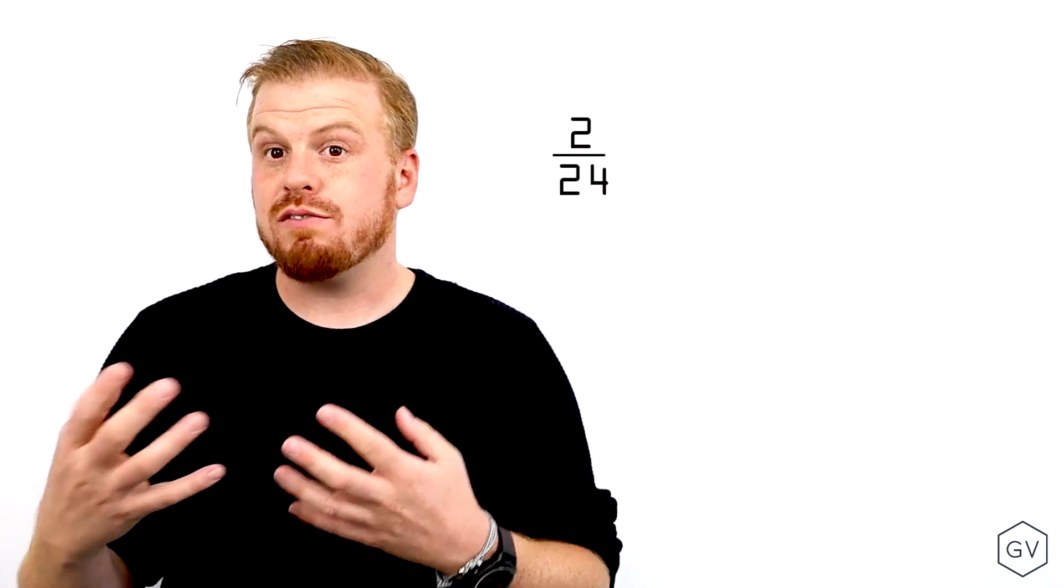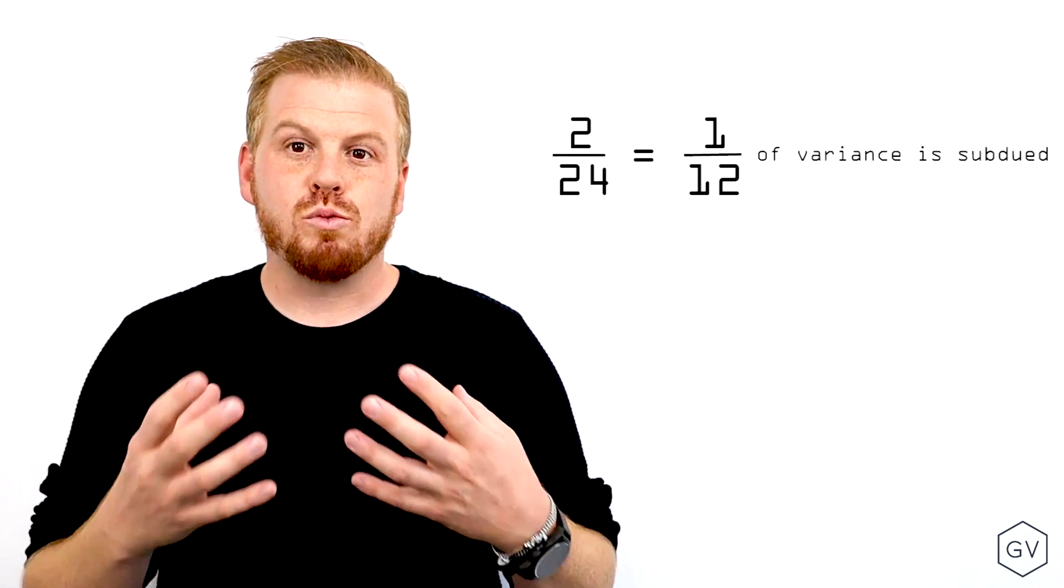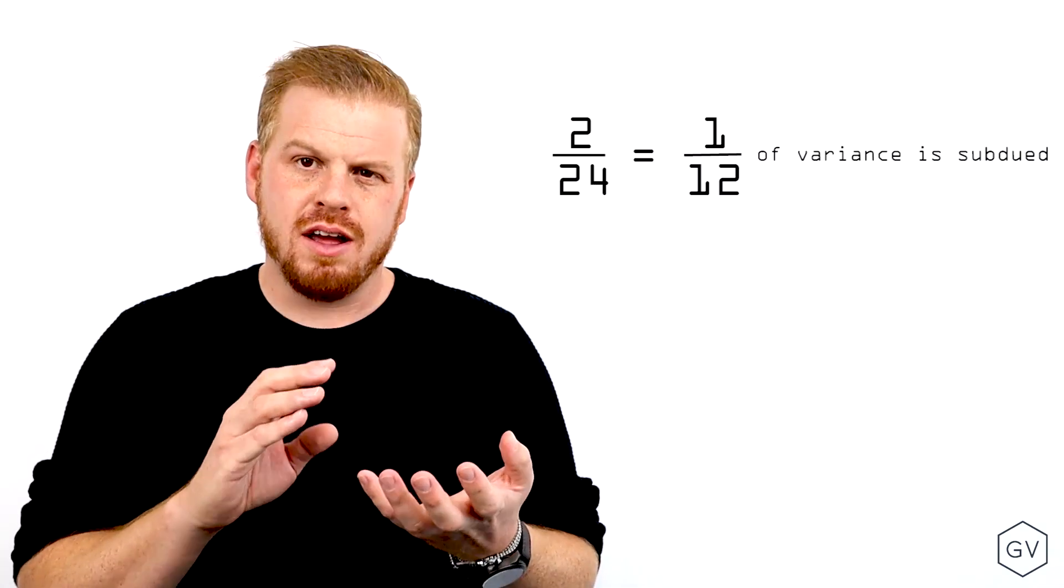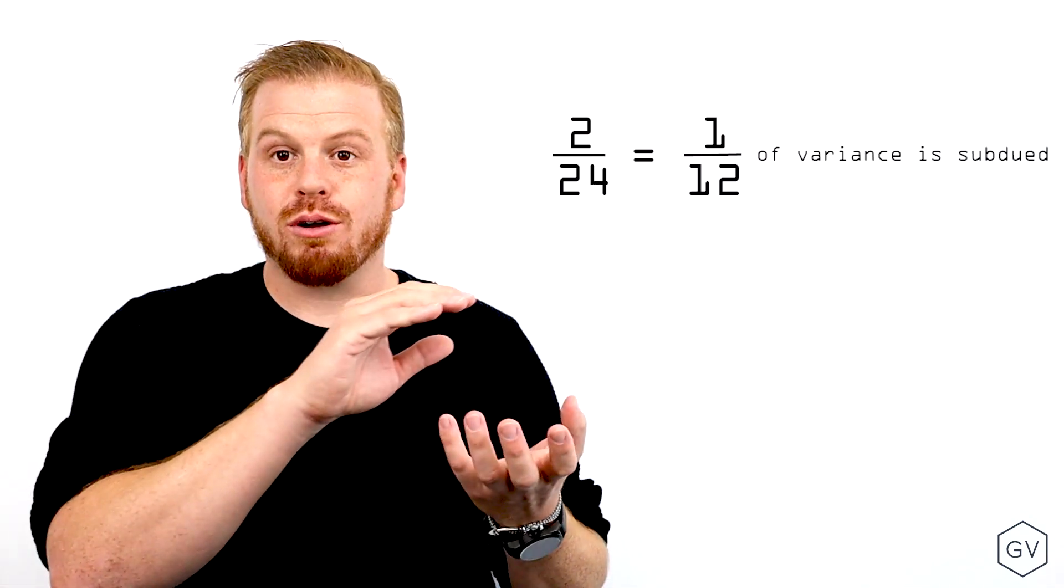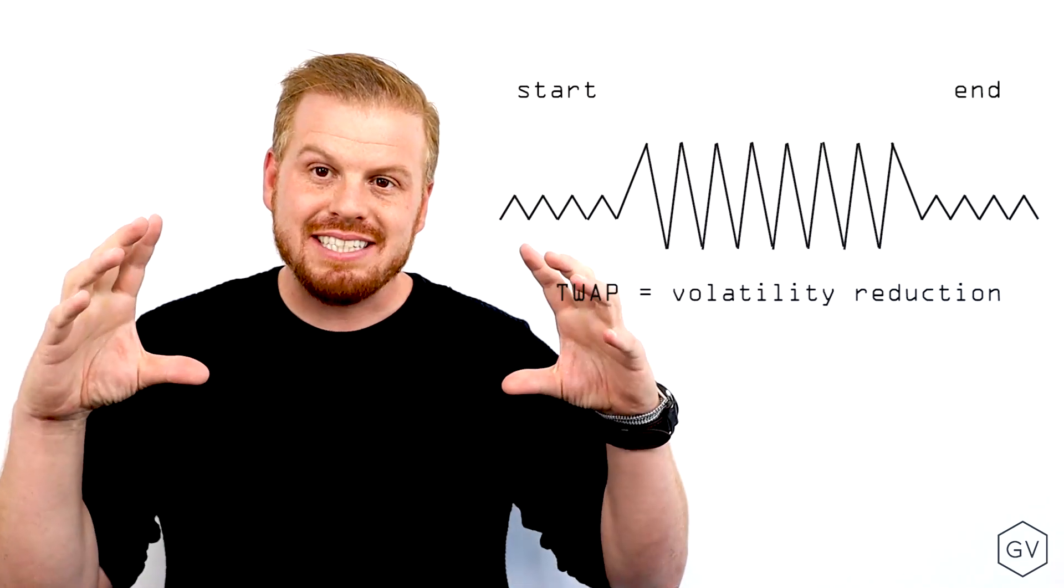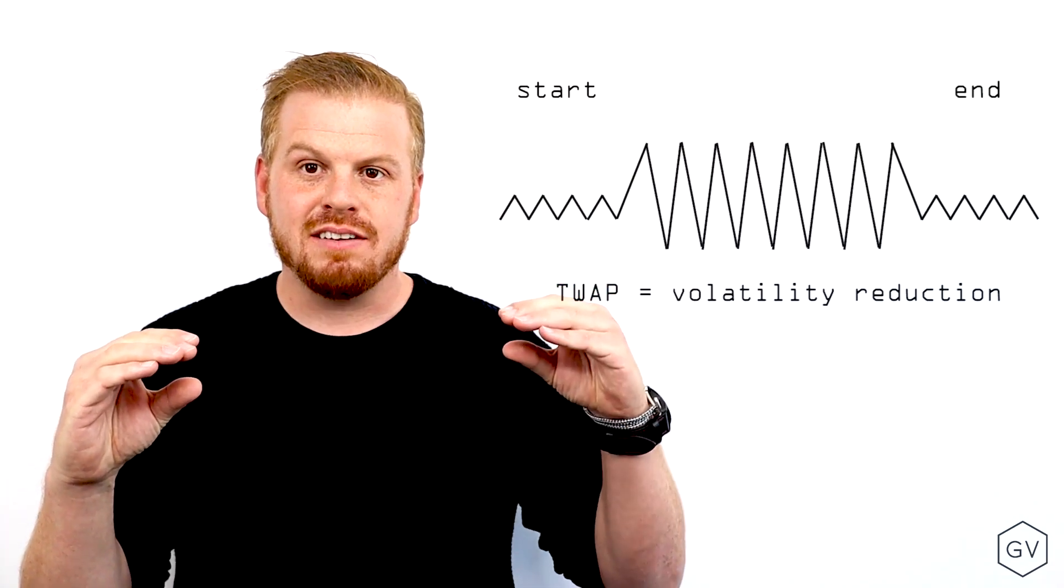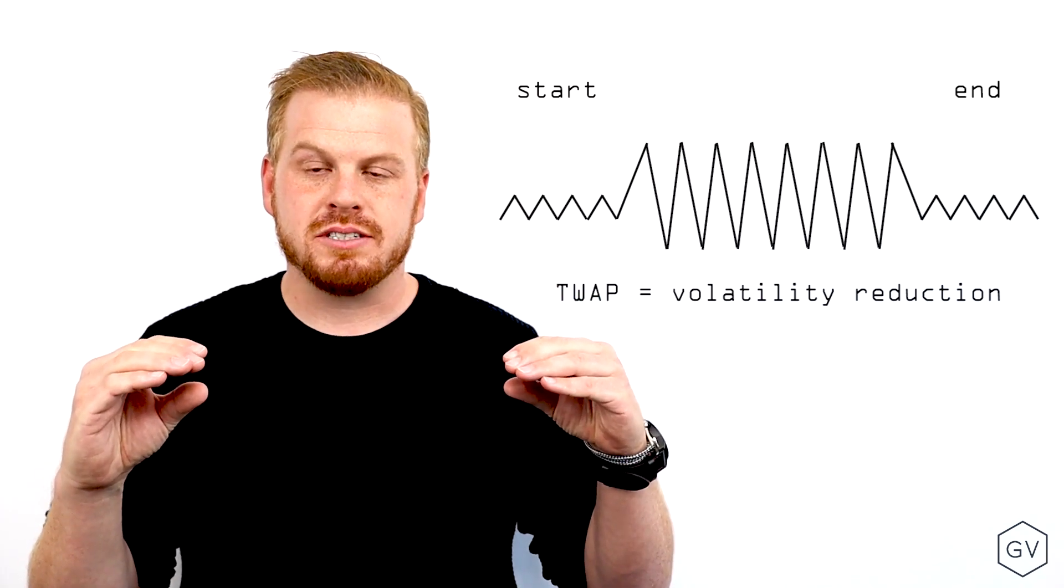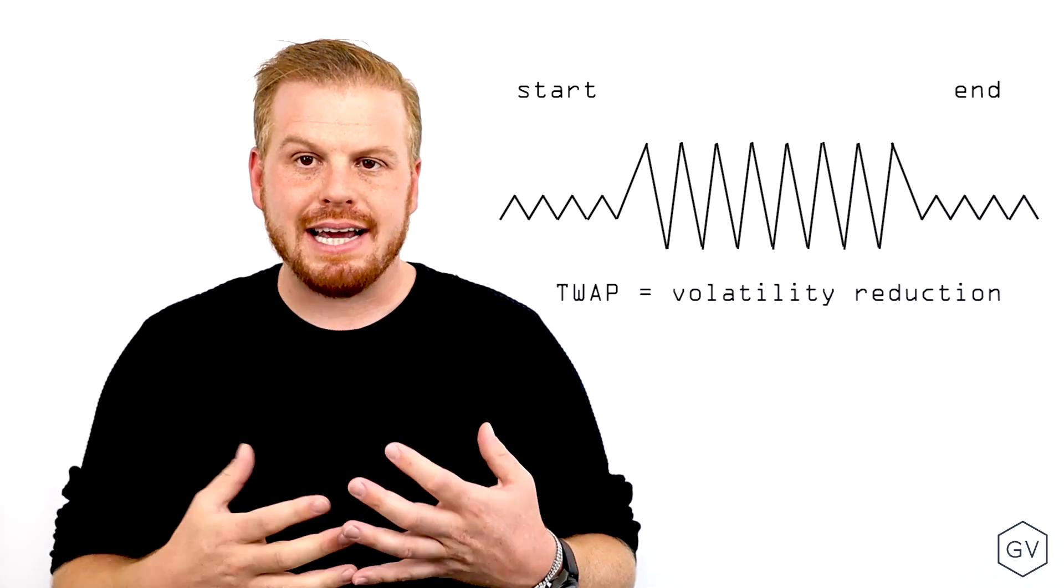but on a daily move contract, two hours out of 24 hours is 1/12th the amount of variance. So your first hour and your last hour, because you're using a time weighted average price instead of the strike price at the very first second of creation and the settlement value at the very last second until expiration,